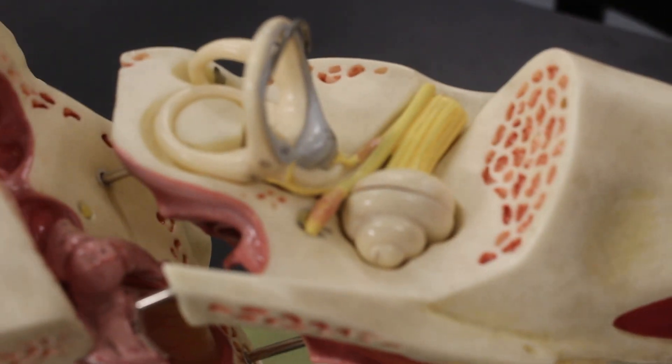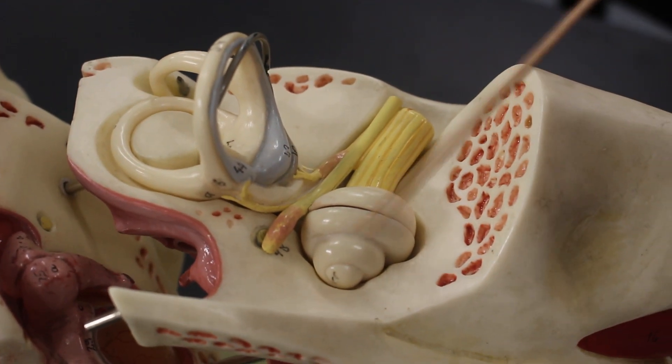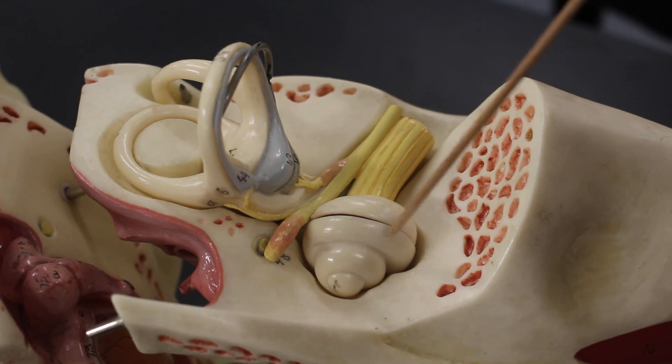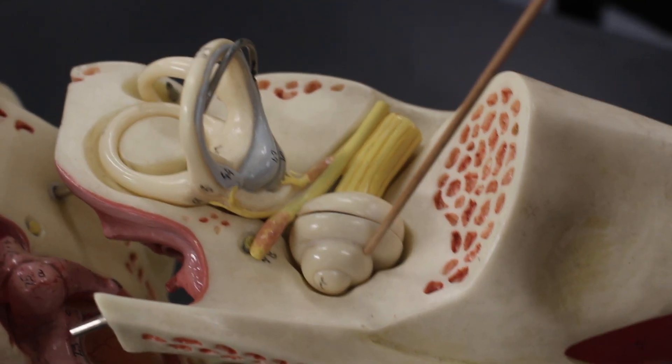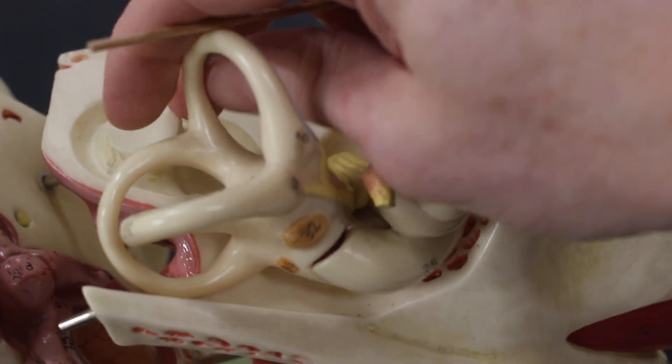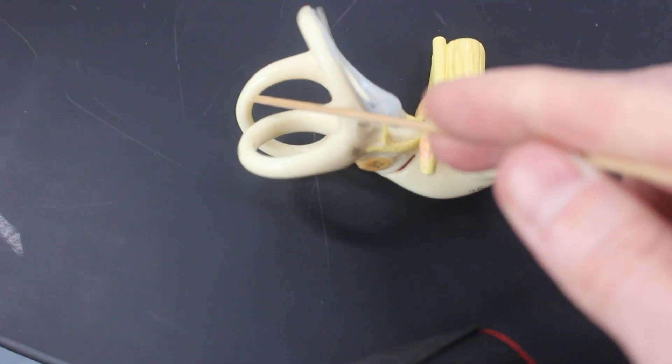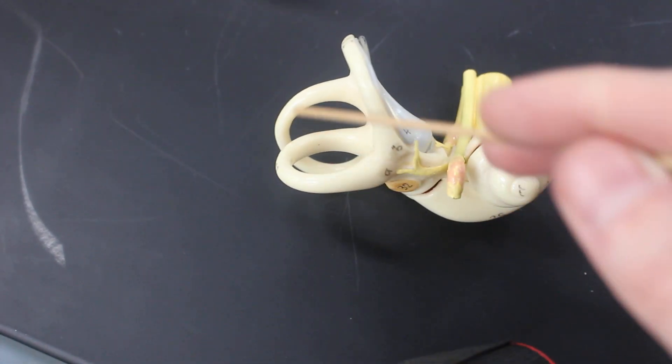Here is the inner ear. The inner ear includes the hard shell, this whole structure, which is the osseous labyrinth that can be broken down into regions. This region with these tubes here are the semicircular canals, which end in the widened areas called the ampulla.